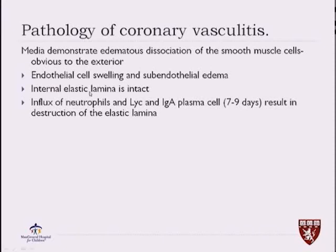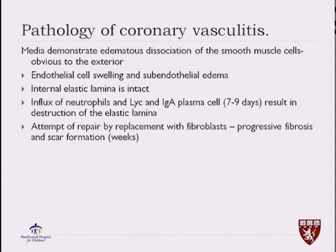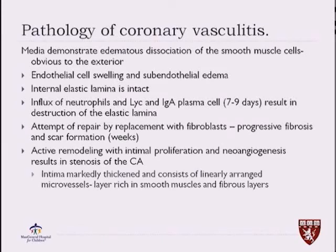The pathology of coronary vasculitis involves severe inflammation causing the media of the vessel to swell, with dissociation of smooth muscle cells obvious to the exterior. There is endothelial cell swelling and subendothelial edema. The internal elastic lamina is intact initially; however, because of the inflammation, there is influx of neutrophils, lymphocytes, and plasma cells within day seven to nine of the disease that destroy this elastic lamina.